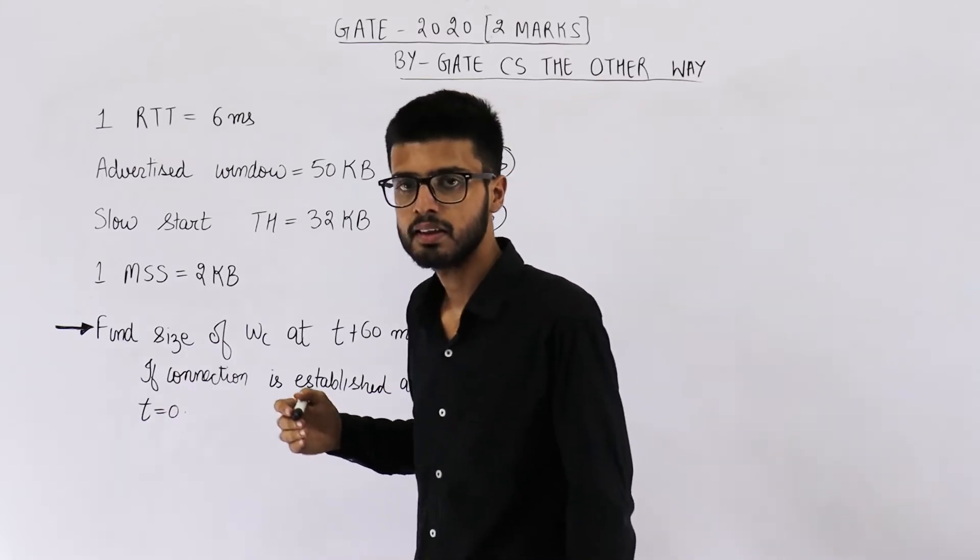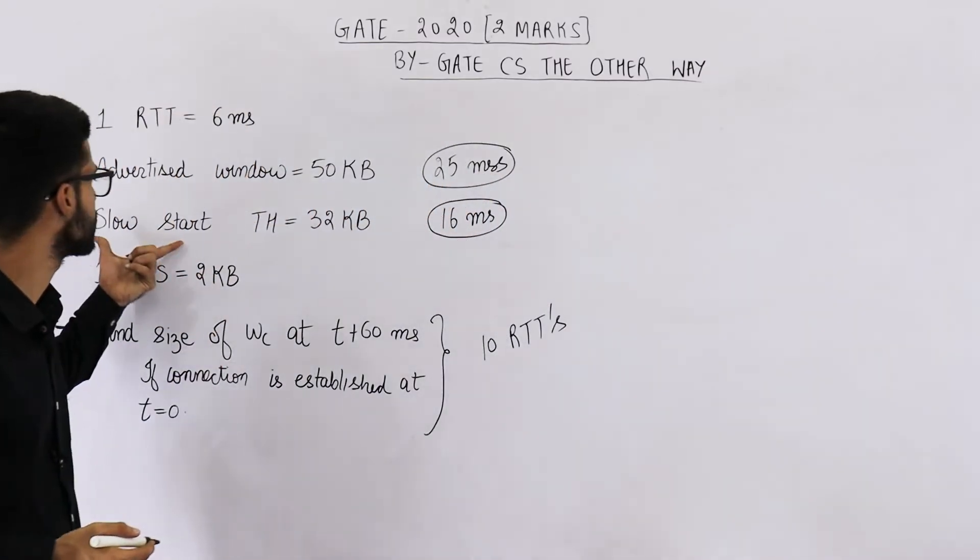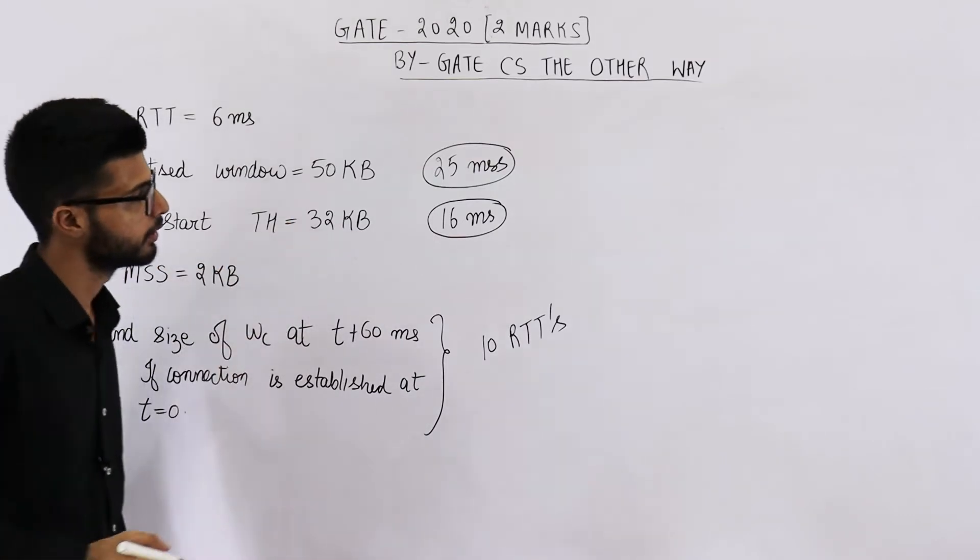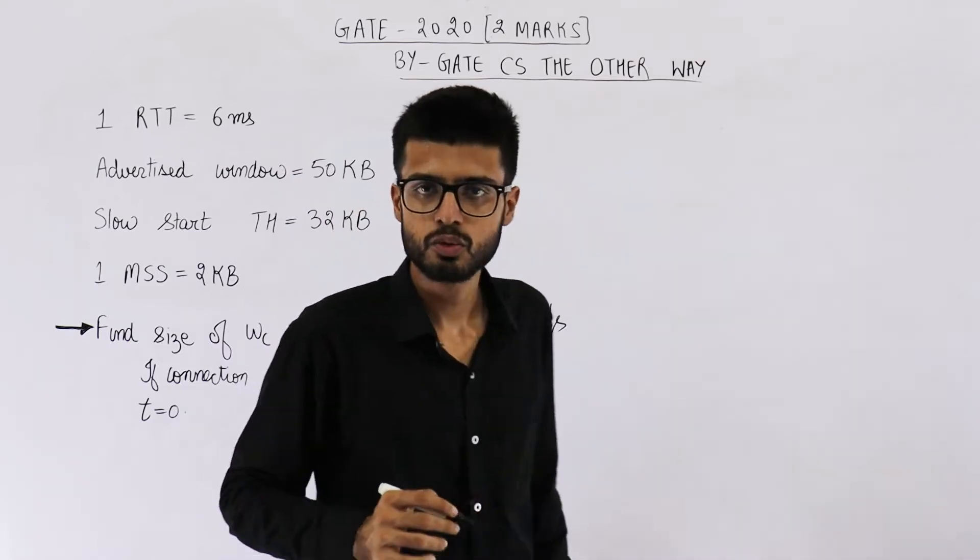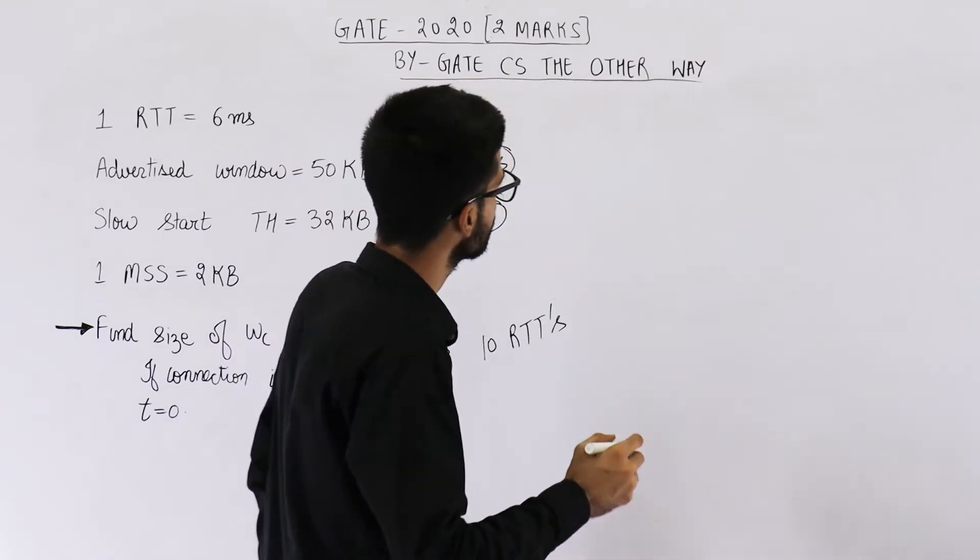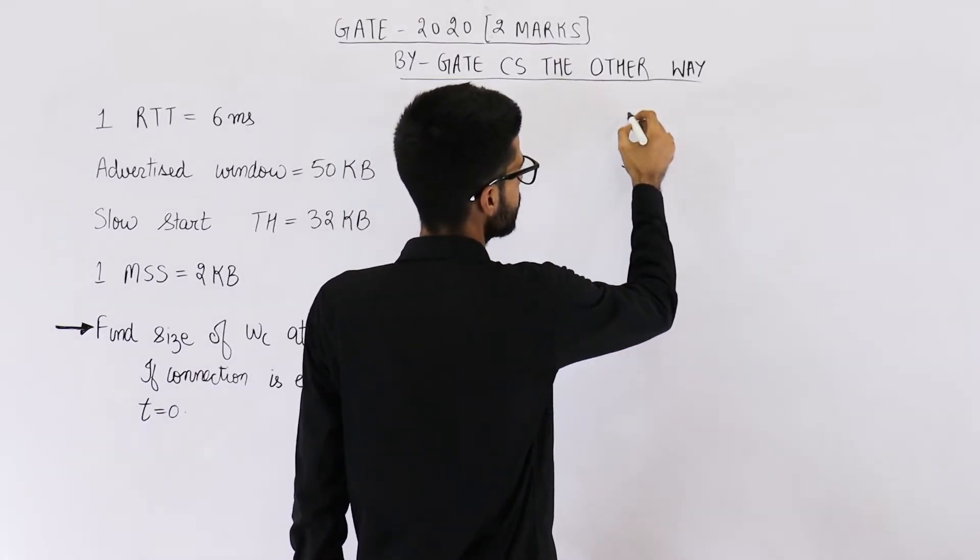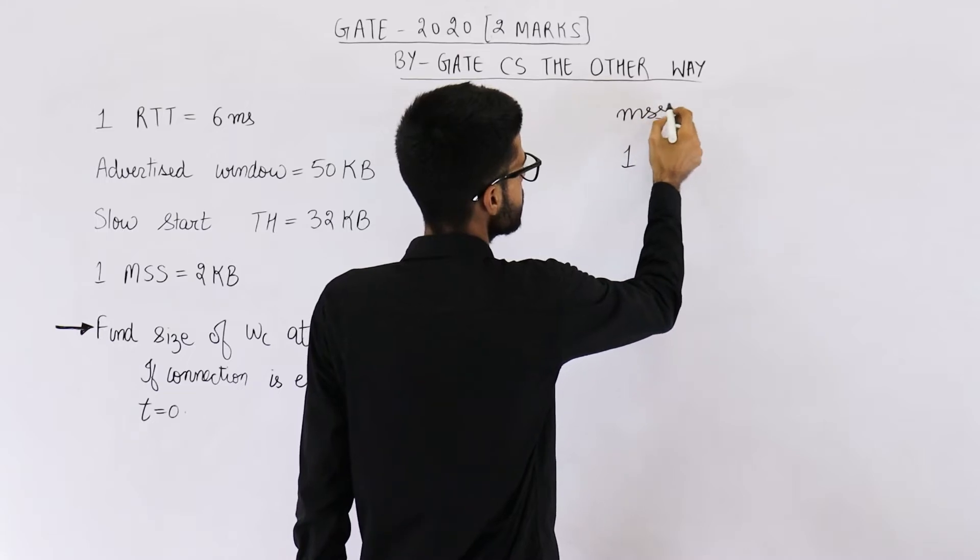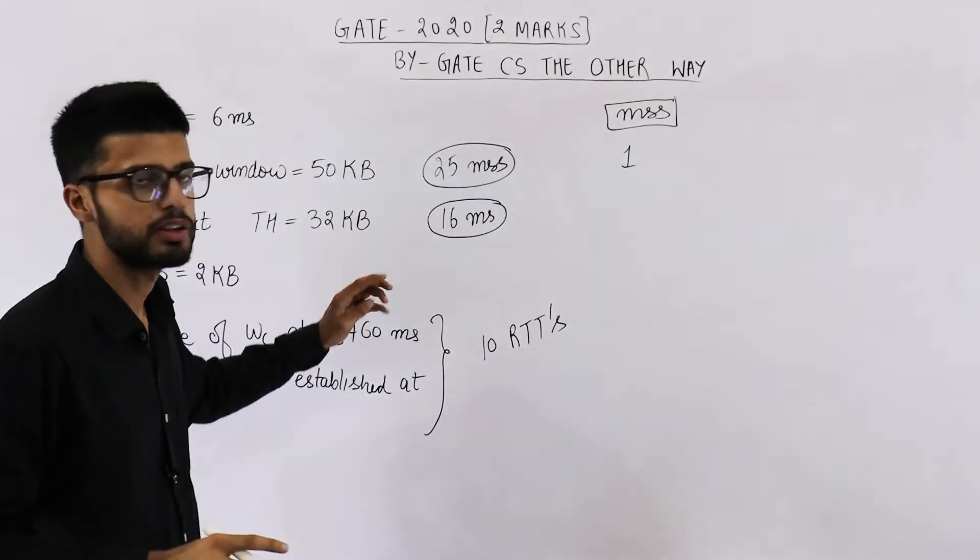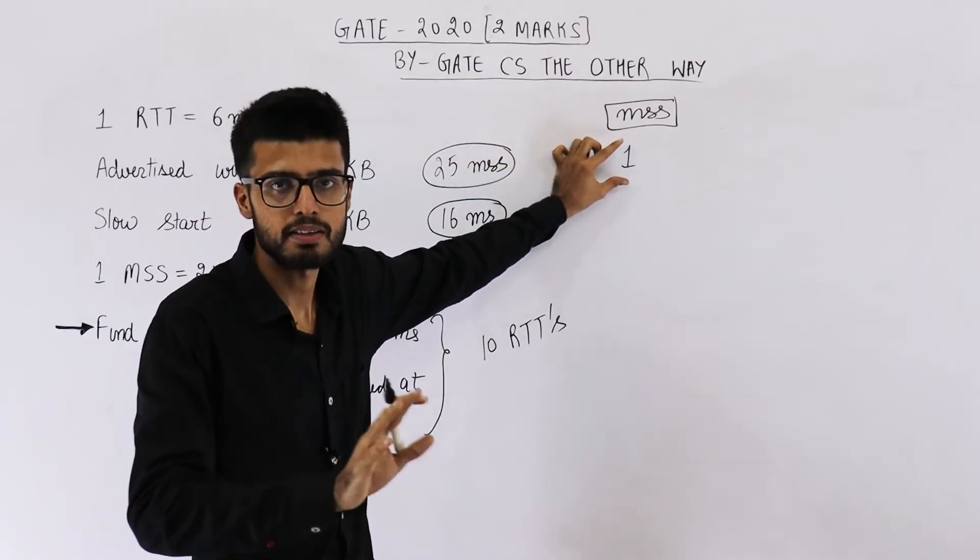Now we can start the question. They are saying that we start at time t equals 0 in this phase. Threshold for this phase is 32 KB. So in slow start phase, what happens? We start from 1 MSS. So initially window size will be 1 MSS. All these sizes are in MSS only. Always take the size in maximum segment sizes.